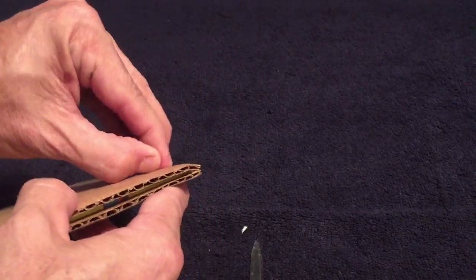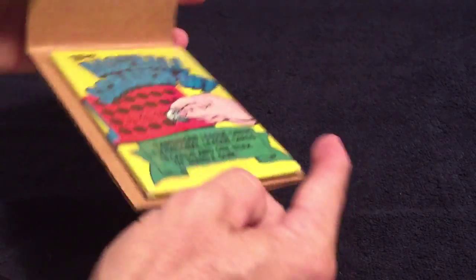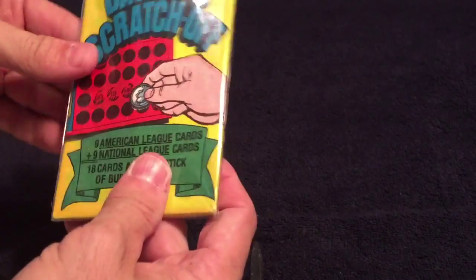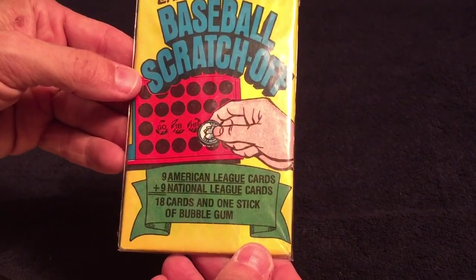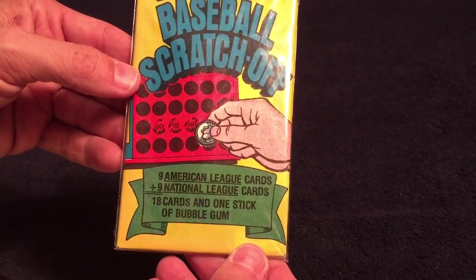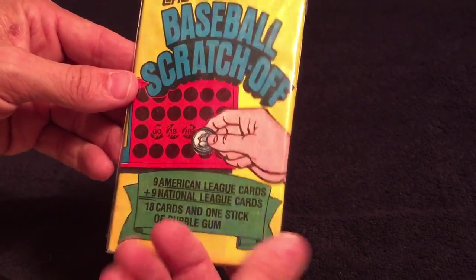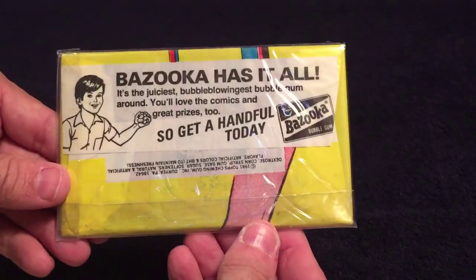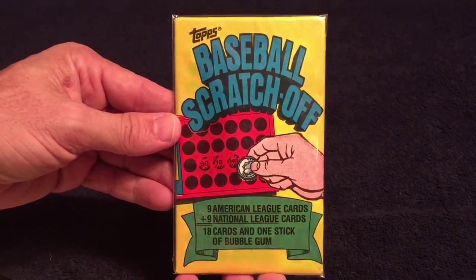I'm not gonna cut it, let's just peel this back. And we have a baseball scratch off: nine American League cards, nine National League cards, 18 rub off, stick of gum. Very cool.